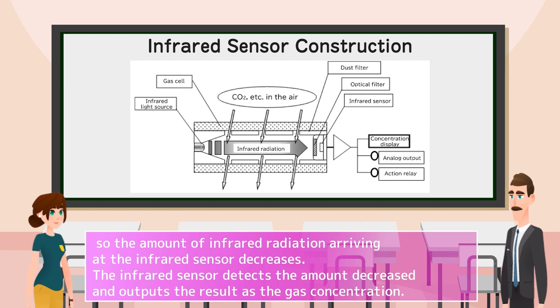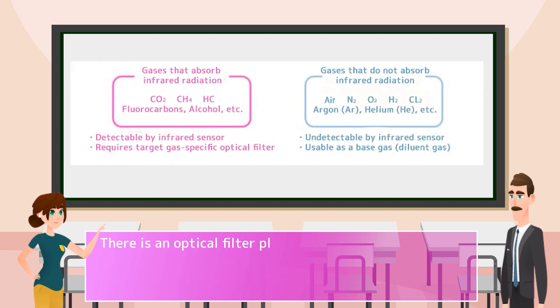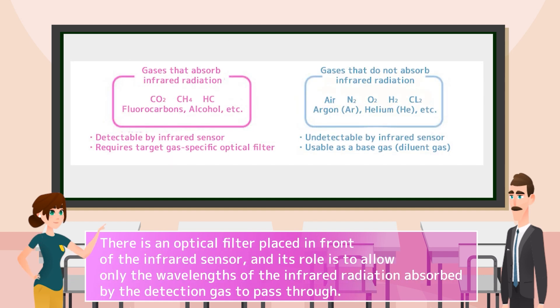The infrared sensor detects the amount decreased and outputs the result as the gas concentration. There is an optical filter placed in front of the infrared sensor, and its role is to allow only the wavelengths of the infrared radiation absorbed by the detection gas to pass through.